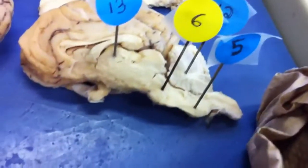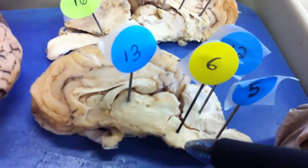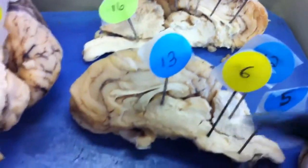Then we have the medulla oblongata, which is five. Then we have six will be the pons, and then 13 will be the thalamus, the big one.